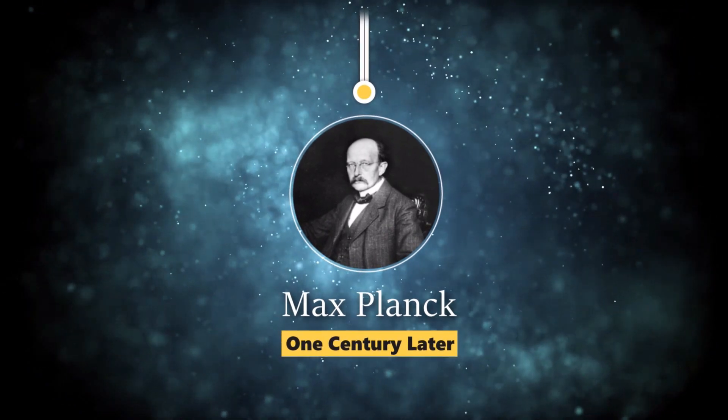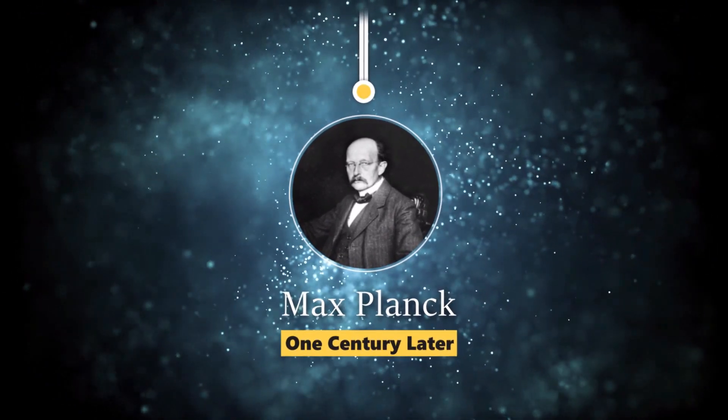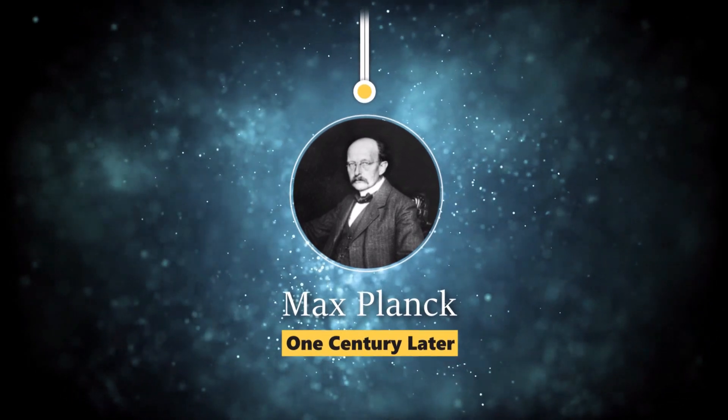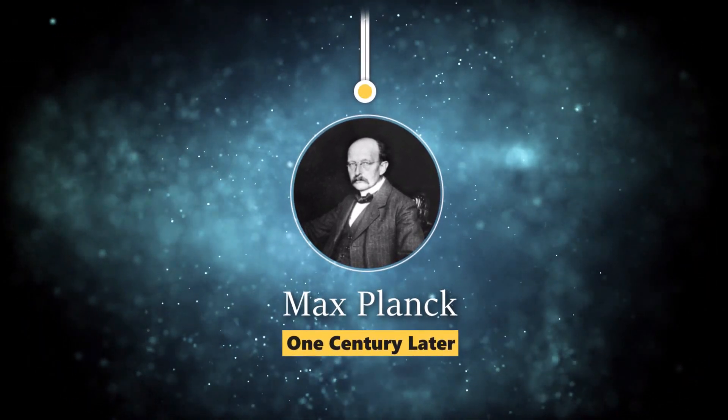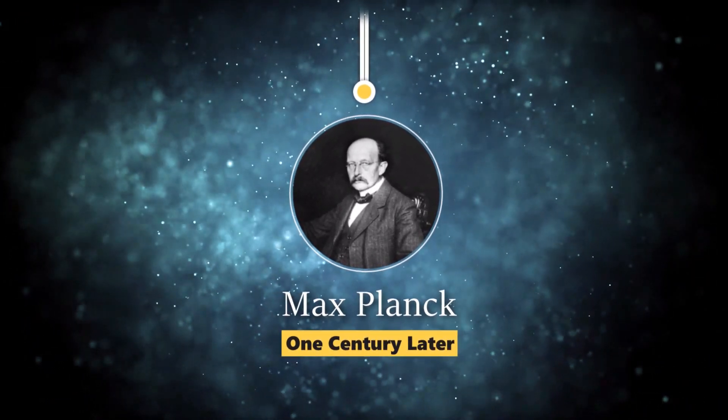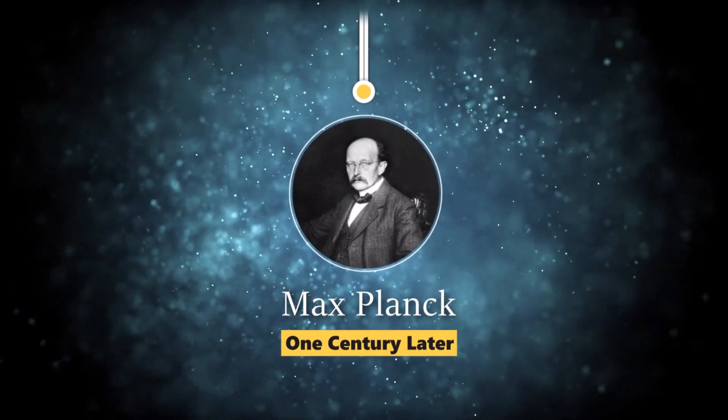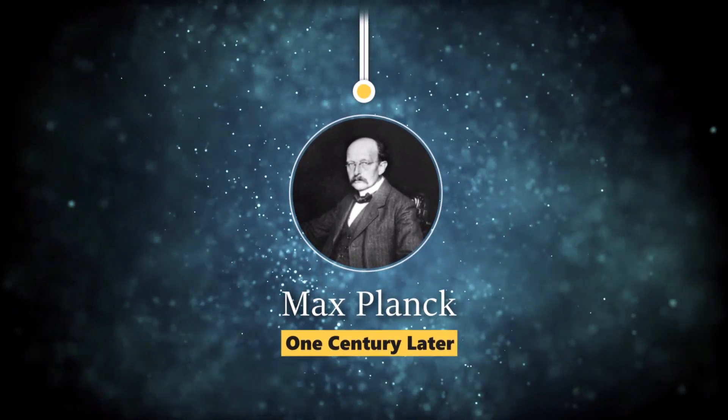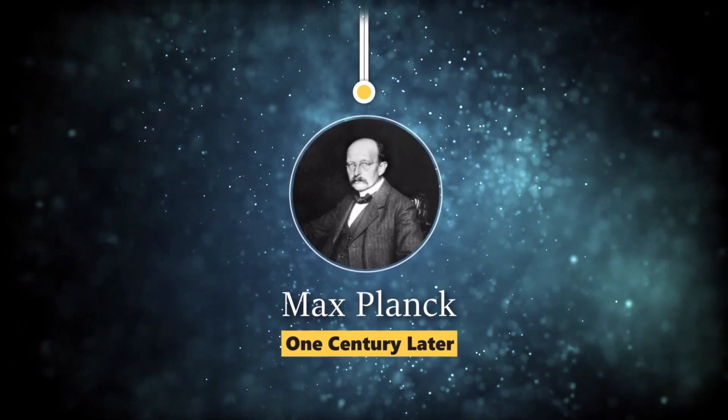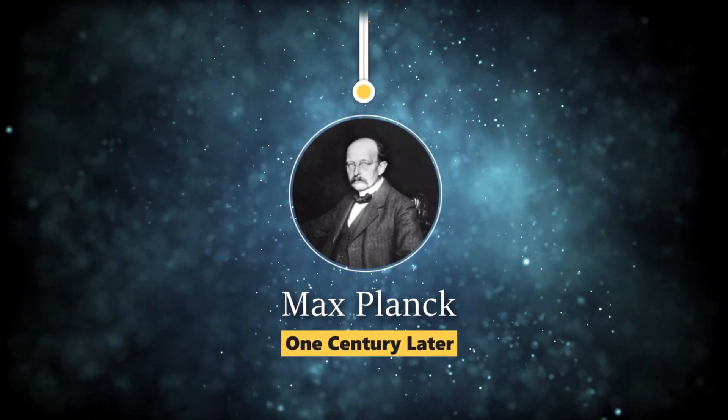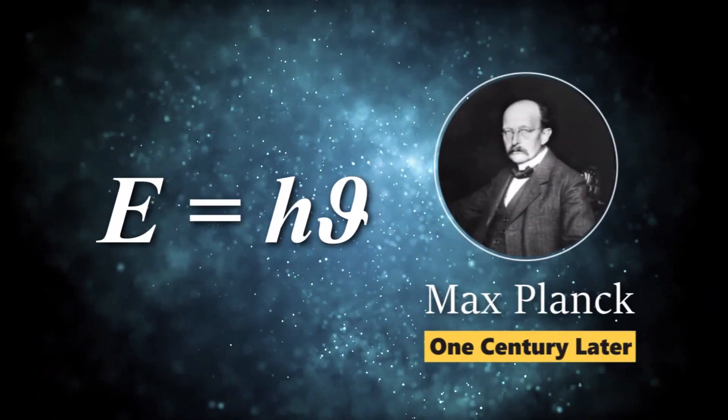One century later, Max Planck formulated his idea of emission of light to solve the problem of thermal equilibrium of an absolutely black body. He found that the energy of light should be quantized, and his experiments showed the energy formula of each packet, which called photon, is h nu.